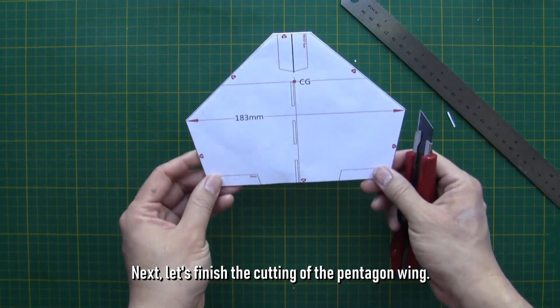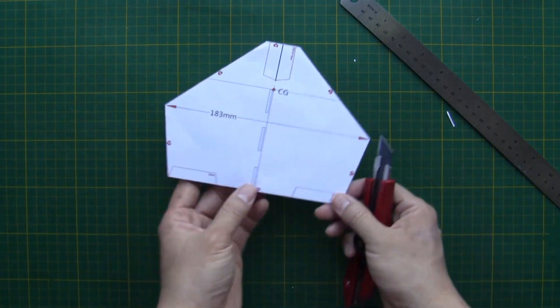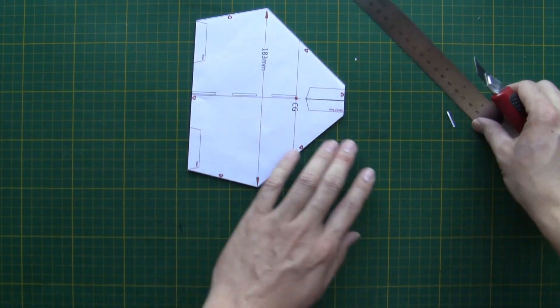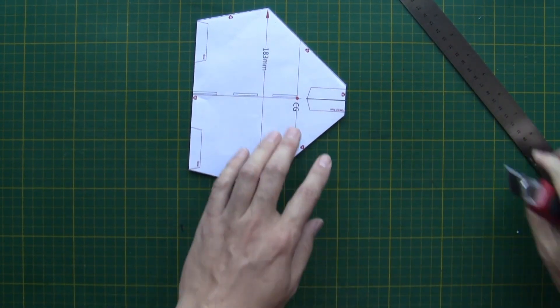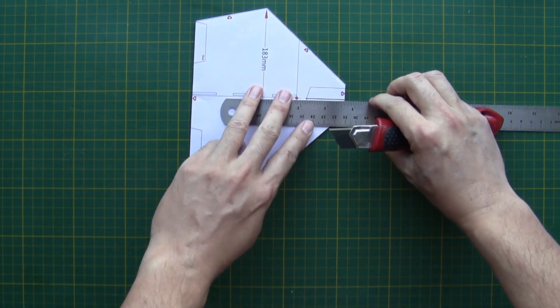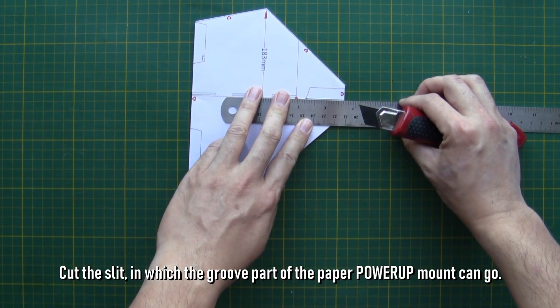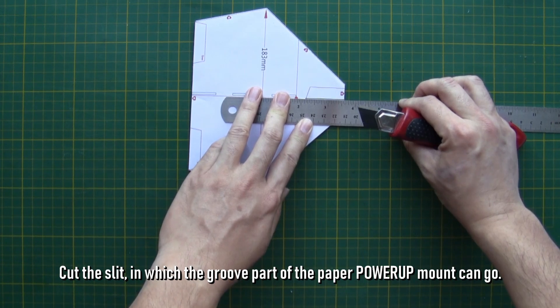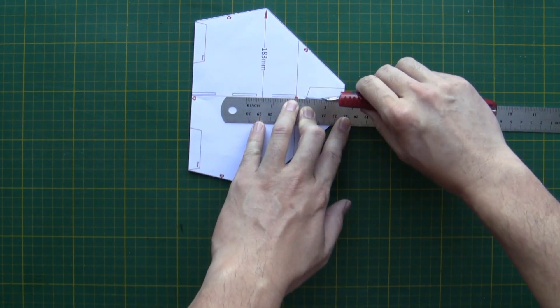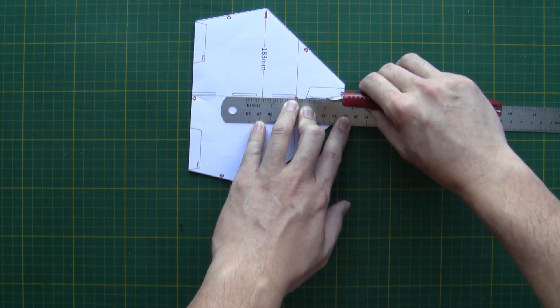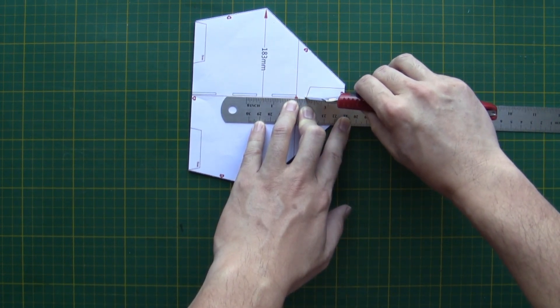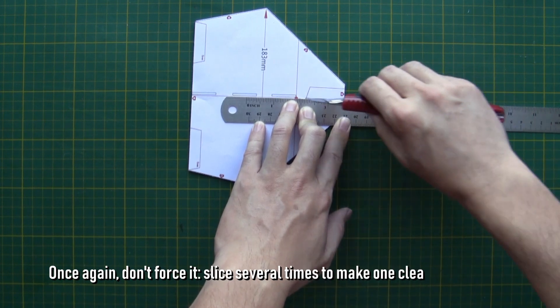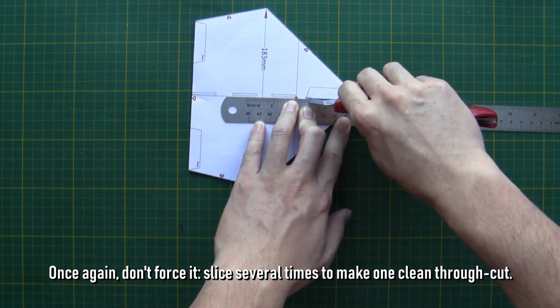Next, let's finish the cutting of the pentagon wing. Cut the slit, in which the groove part of the paper power-up mount can go. Once again, don't force it, slice several times to make one clean through cut.